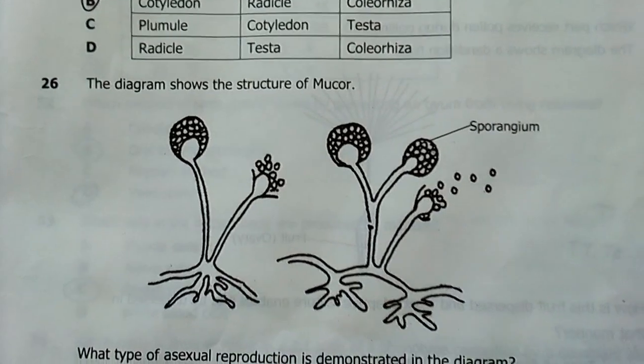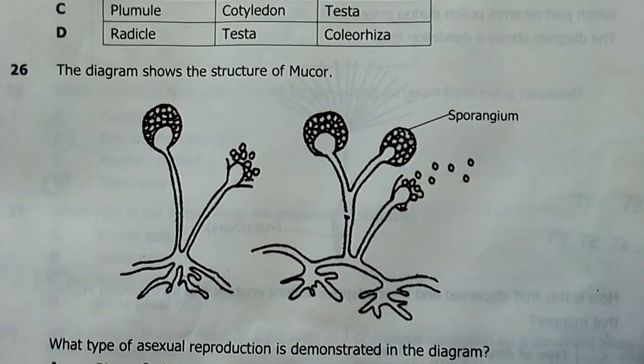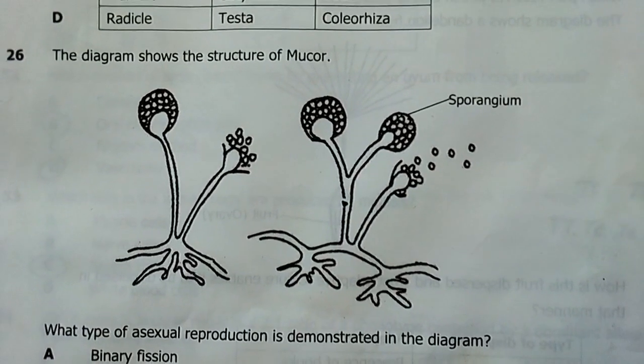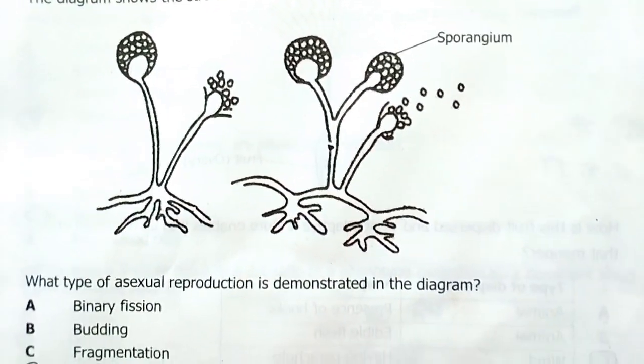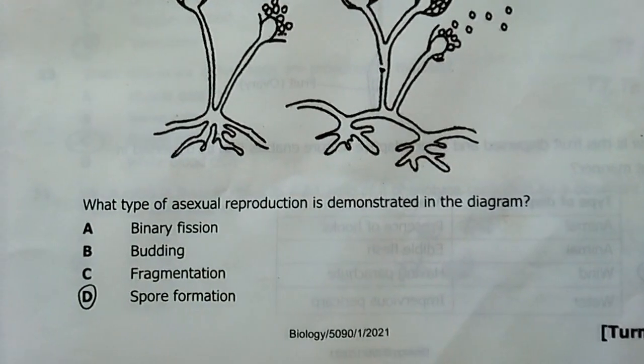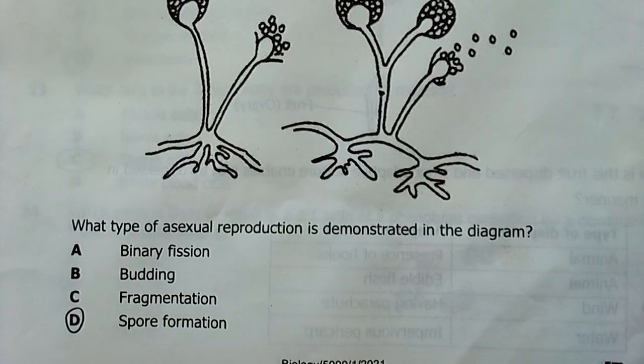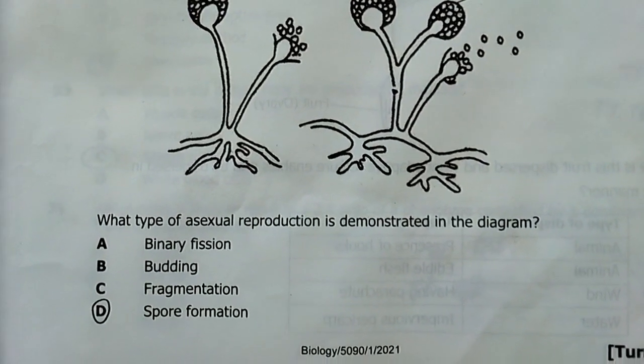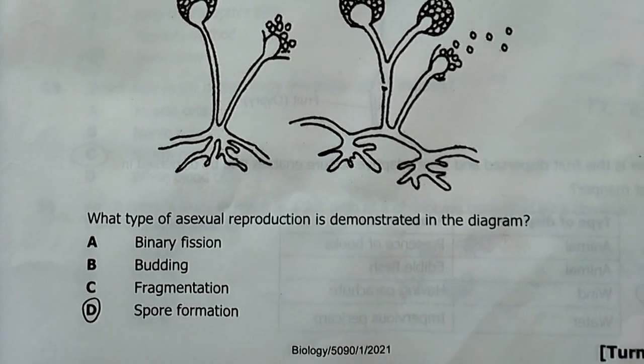26, the diagram shows the structure of mucor, another type of fungus. Sporangium. These are spores spreading, going into the air. What type of asexual reproduction is demonstrated in the diagram? Spore formation. Spore formation is the reproduction type shown there.